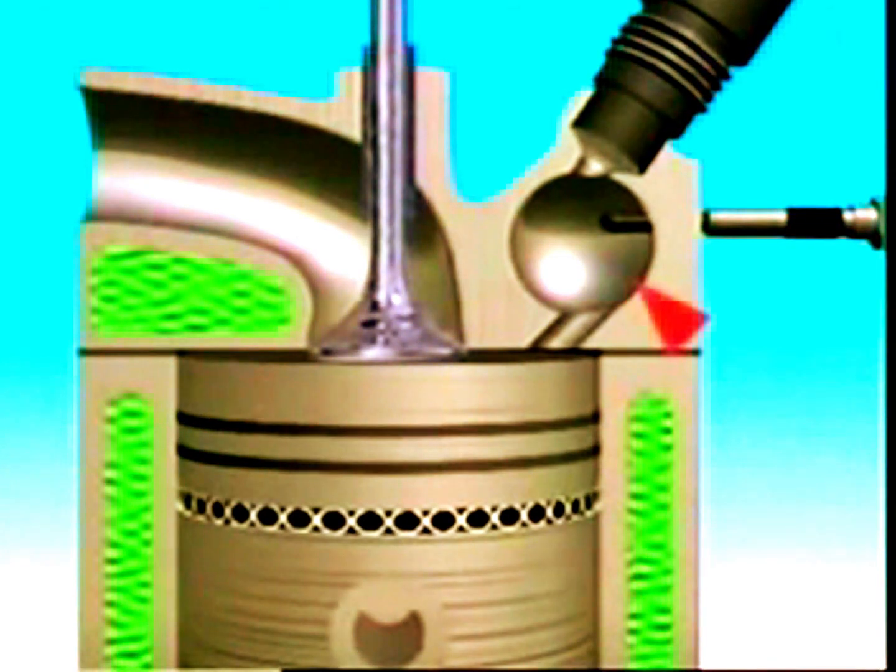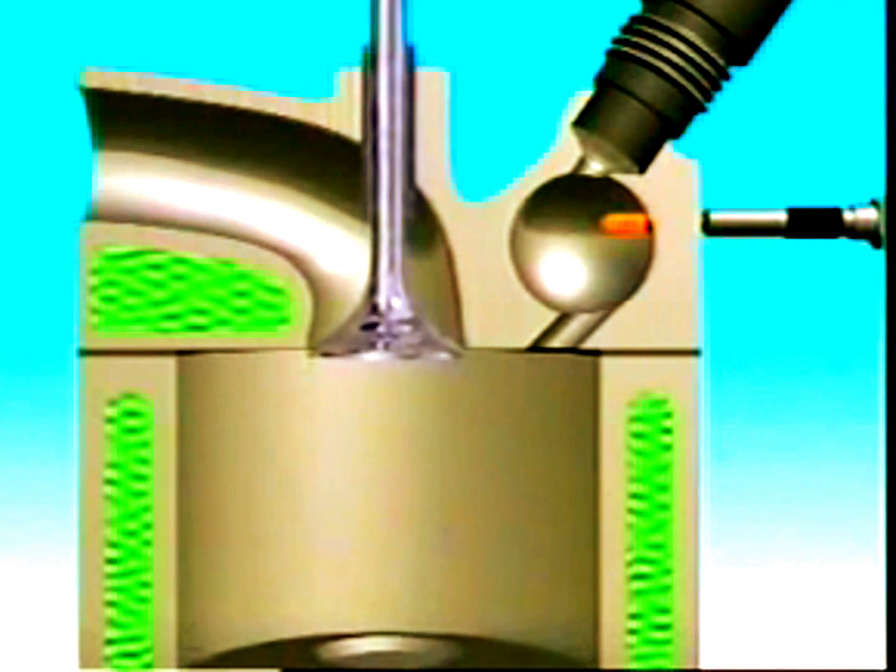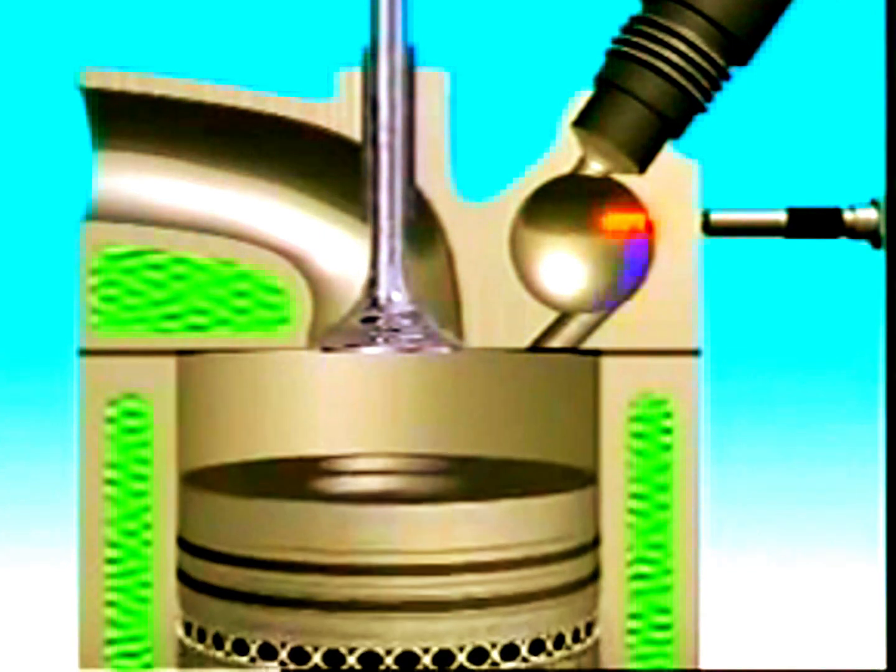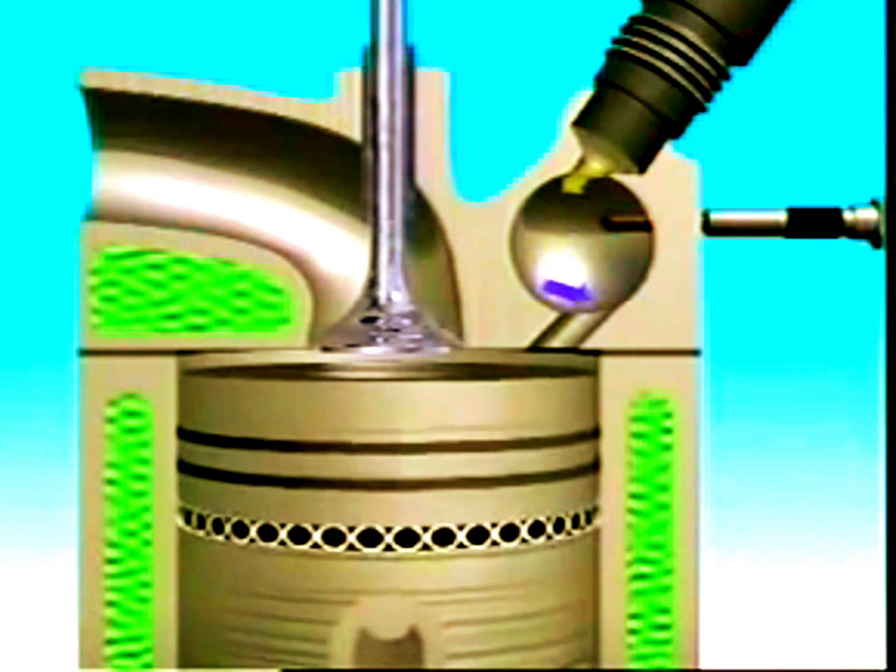This is a swirl chamber. It's spherical and connected to the main chamber by an angled passage. Both the injector and glow plug are screwed into the head. The glow plug preheats the air inside to help start the engine. During compression, the spherical shape makes the air swirl in the chamber.